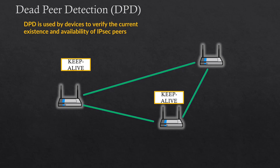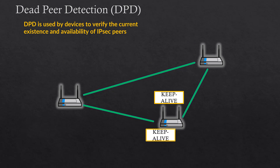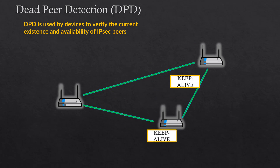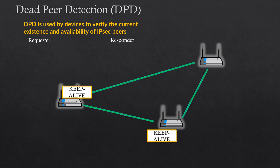So how it works: we have multiple peers on the network, and we basically send keepalive packets everywhere and wait for a reply. If there is a reply, it's fine and we still keep the connection open. As you can see, we send an 'are you there' packet to every device, and if we receive an 'are you there' ACK acknowledgement packet, everything is going to be fine and the tunnel will still be up.